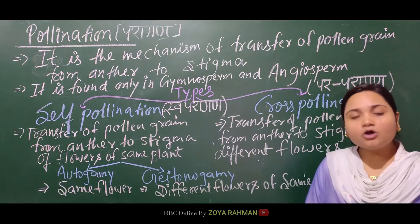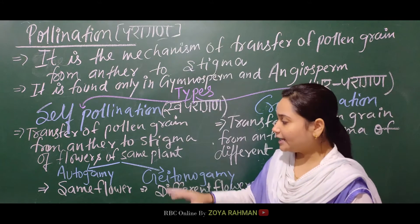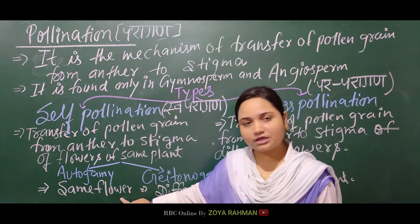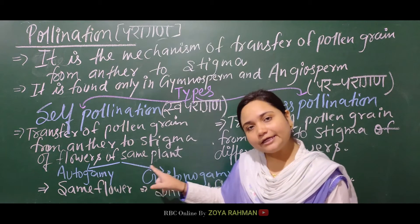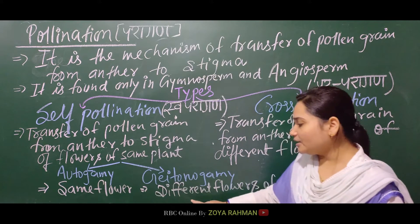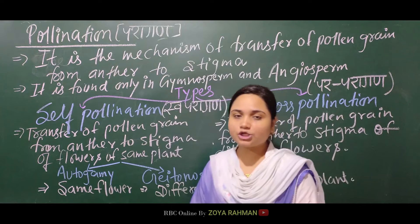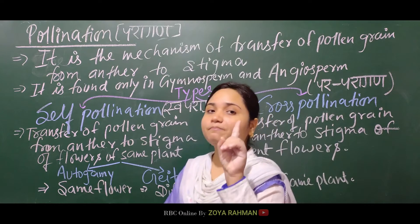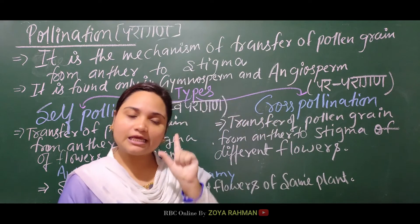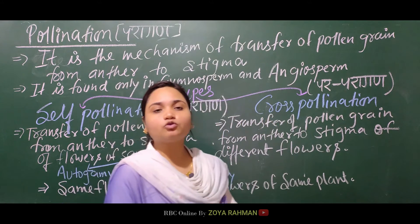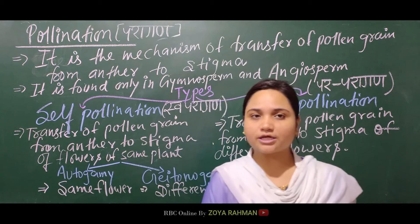For self-pollination, we have two subtypes: autogamy and geitonogamy. Autogamy means pollination within the same flower. Geitonogamy means pollination between different flowers, but the plant must be the same — two flowers on one plant must be on the same plant.